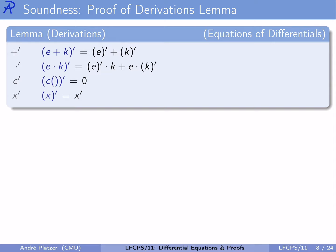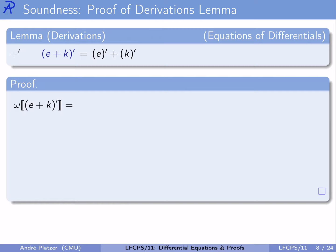For each axiom, we have to prove that every instance is a valid formula — true in all states. We fix an arbitrary state ω and ask when an equation is true: by the definition of semantics, when evaluating the left-hand side equals evaluating the right-hand side. The value of the differential of E plus K is the differential form corresponding to its spatial derivatives: the sum over all variables of the partial derivative of the value of E plus K with respect to x at state ω, multiplied by the value of x-prime.